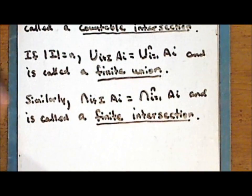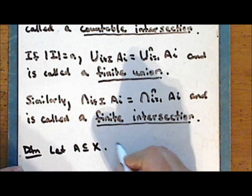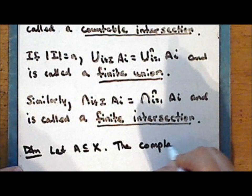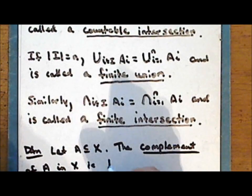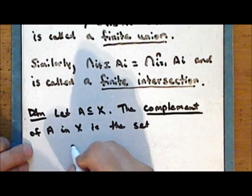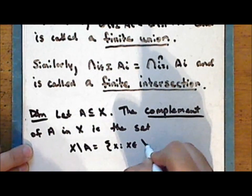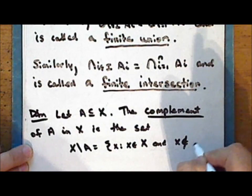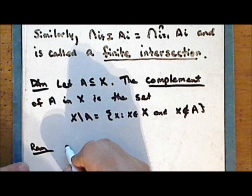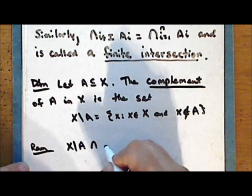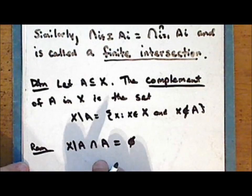New definition: let A be a subset of a larger set X. The complement of the set A in the set X is the set X minus A — the set of those elements x such that x is in the set X and x is not in the set A. Notice that the intersection of the complement of A with the set A itself is empty, since we have removed all elements that were in A, so the two sets no longer have anything in common.